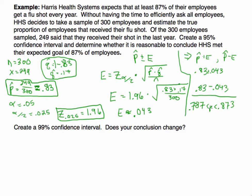If you were to write out the interpretation, you would say, we are 95% confident that the true population proportion, the true proportion of employees that got a flu shot, is between 0.787 and 0.873. We would not say there's a 95% chance or probability. That's not how we interpret confidence intervals.